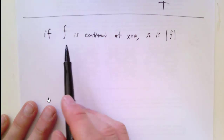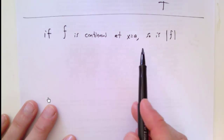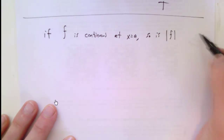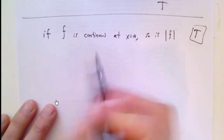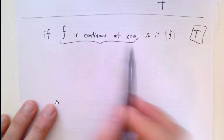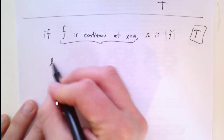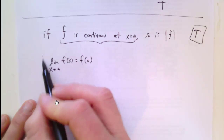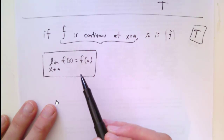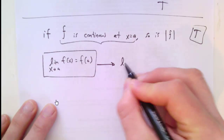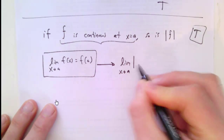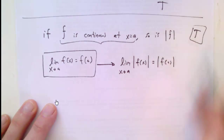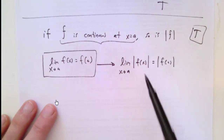What about this: if a function f is continuous at x equals a, must it also be true that the absolute value of f is continuous at that point? This is always true, and here's a direct proof. If f is continuous at a, that means the limit as X approaches a of f of X equals f of a. We want to show that the limit as X approaches a of the absolute value of f of X equals the absolute value of f of a.